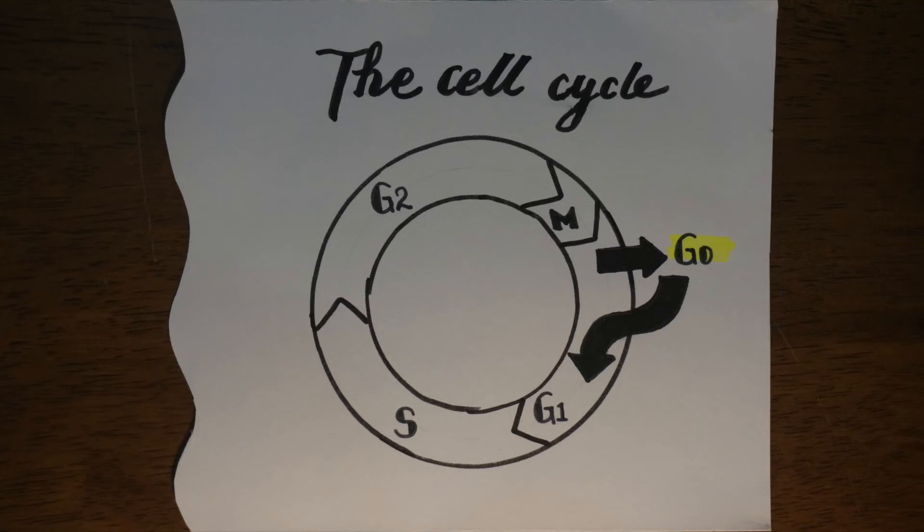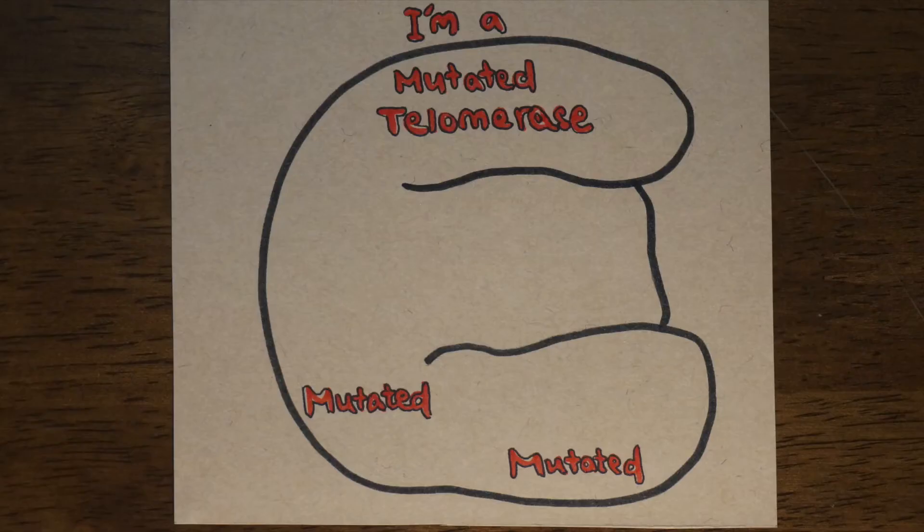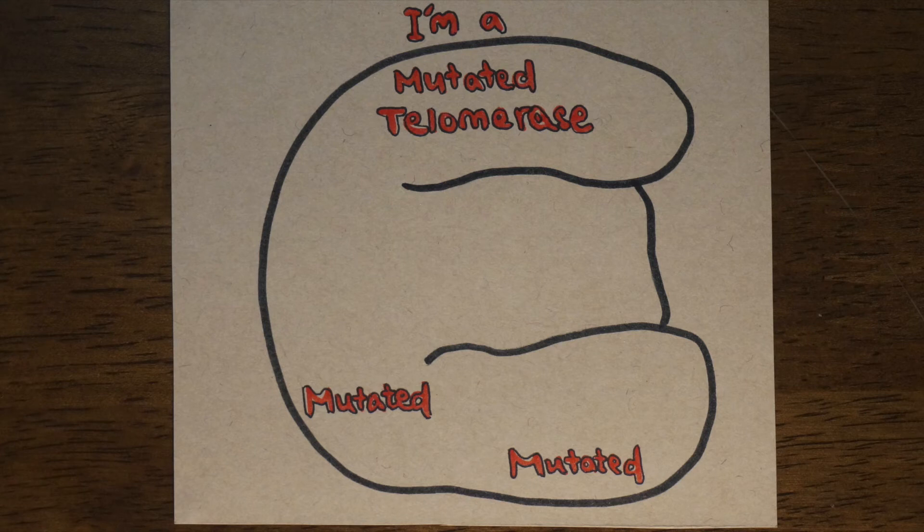This eventually leads to a critical point where senescence is triggered and the cells go into G0 phase of the cell cycle. Normal cells can only replicate between 30 and 50 times before this occurs.